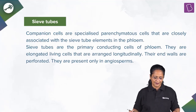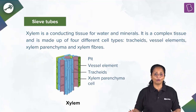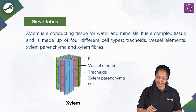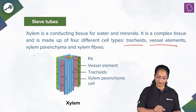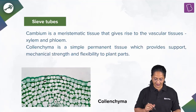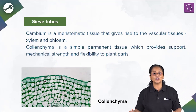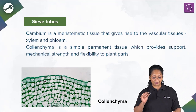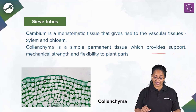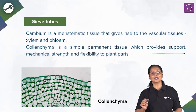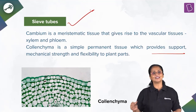Sieve tubes have small openings and are present only in angiosperms. Xylem is a conducting tissue for water and minerals, a complex tissue made up of tracheids, vessel elements, xylem parenchyma, and xylem fibers. Cambium is a meristematic tissue that gives rise to vascular tissue such as xylem and phloem. Collenchyma is a simple permanent tissue providing mechanical support, strength, and flexibility. So the right answer: companion cells are associated with sieve tubes.